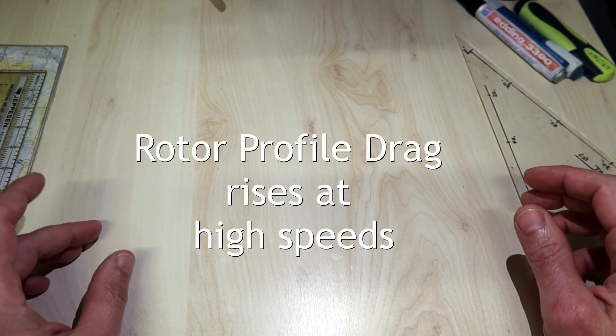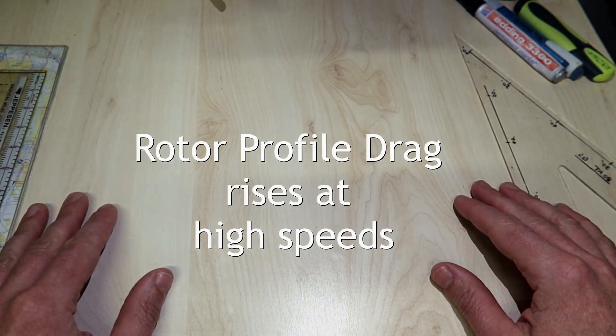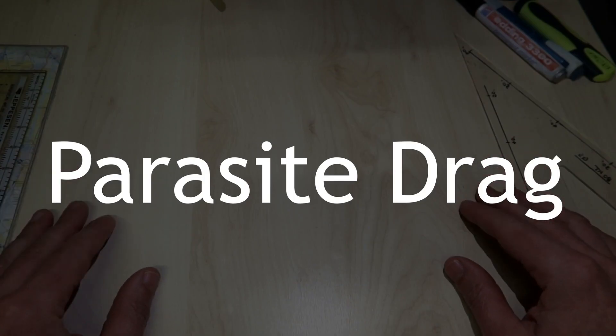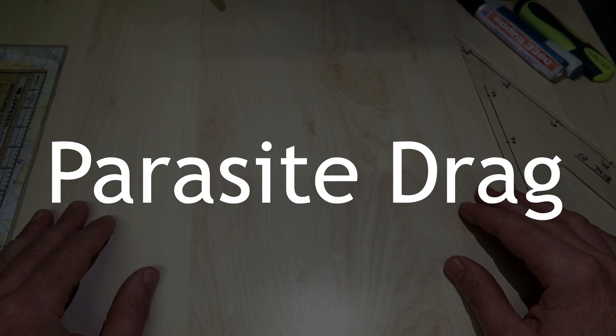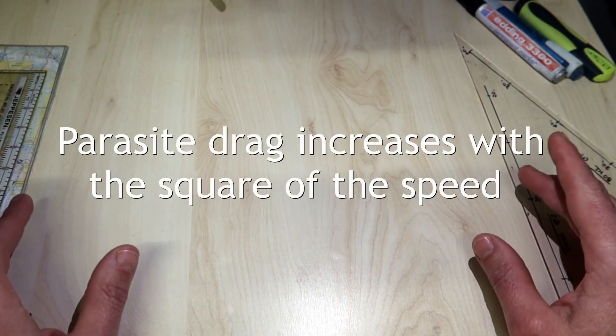So although it is more or less constant at low speeds, rotor profile drag rises at high speeds.